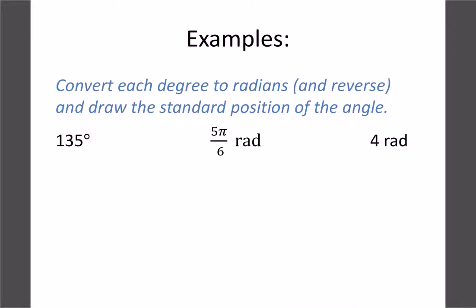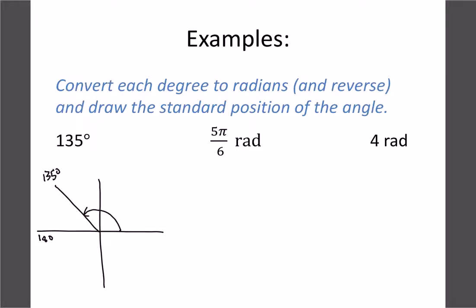Let's do some practice examples converting and drawing angles. For 135 degrees: draw it just before the 180 mark, with a reference angle of 45 degrees (since 45 + 135 = 180). To convert to radians, multiply 135 × π/180 and reduce the fraction to get 3π/4. Since it's a nice fraction, it's best to leave it in that form.